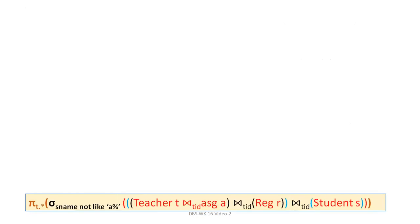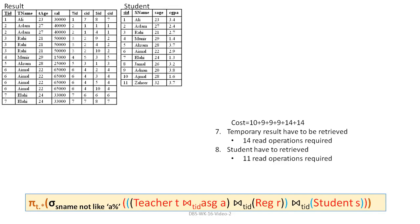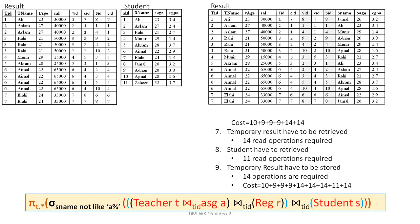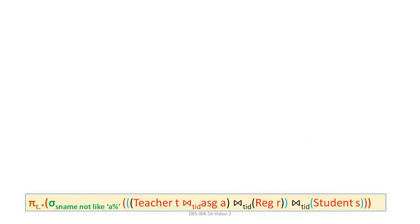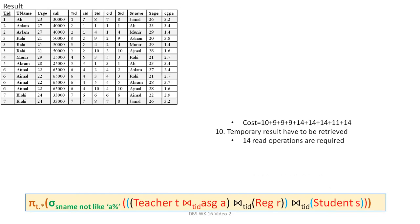Now this temporary result must be read and joined with the Student relation. The cost so far is carried forward. Reading the temporary result: 14 read operations. Reading Student: 11 read operations. Joining them produces 14 records. The updated cost adds 14 + 11 + 14.